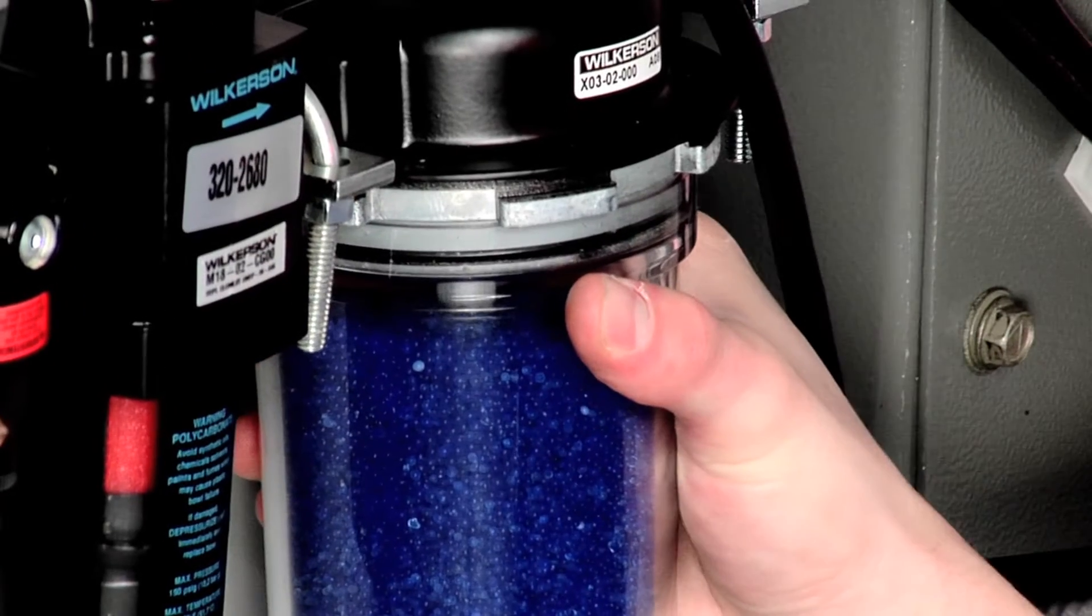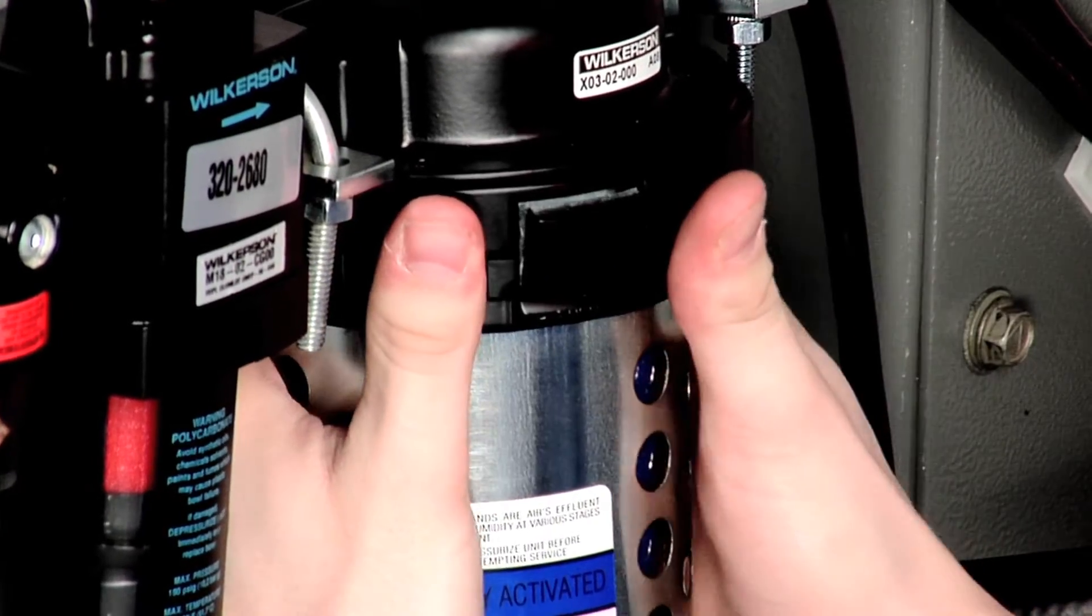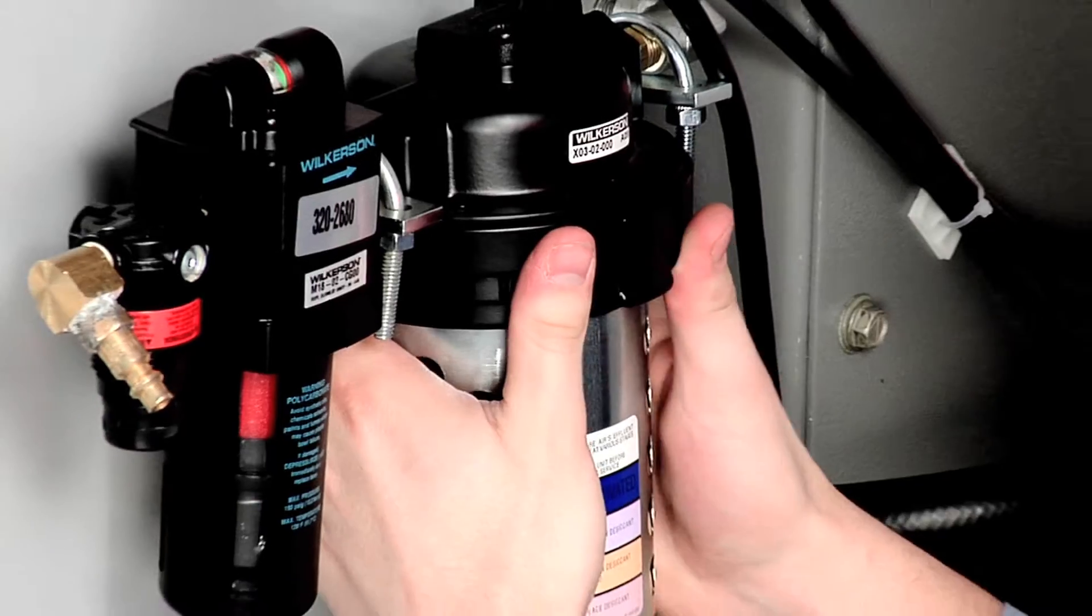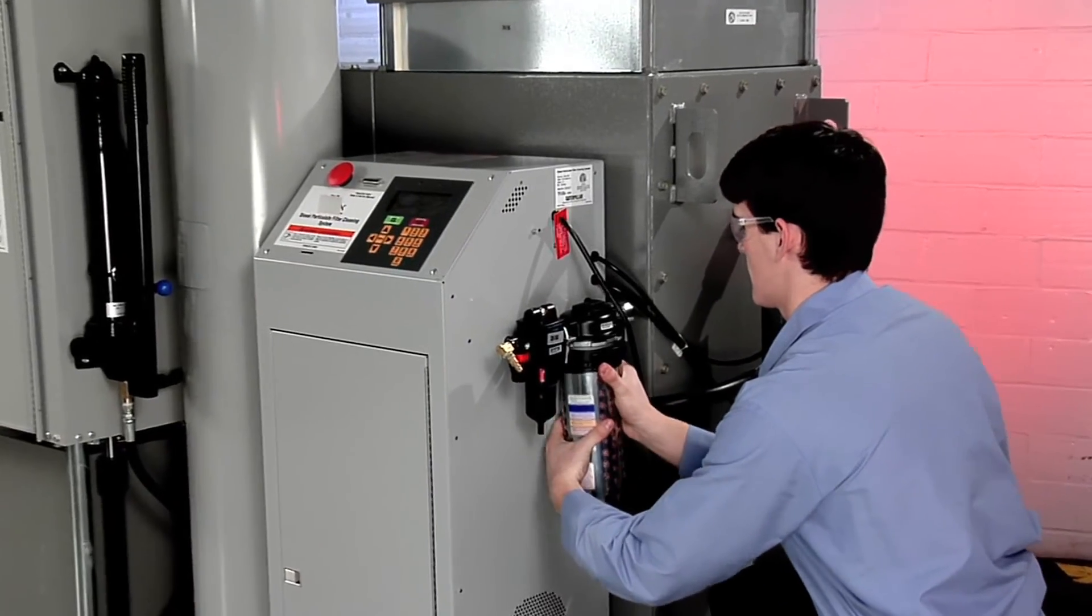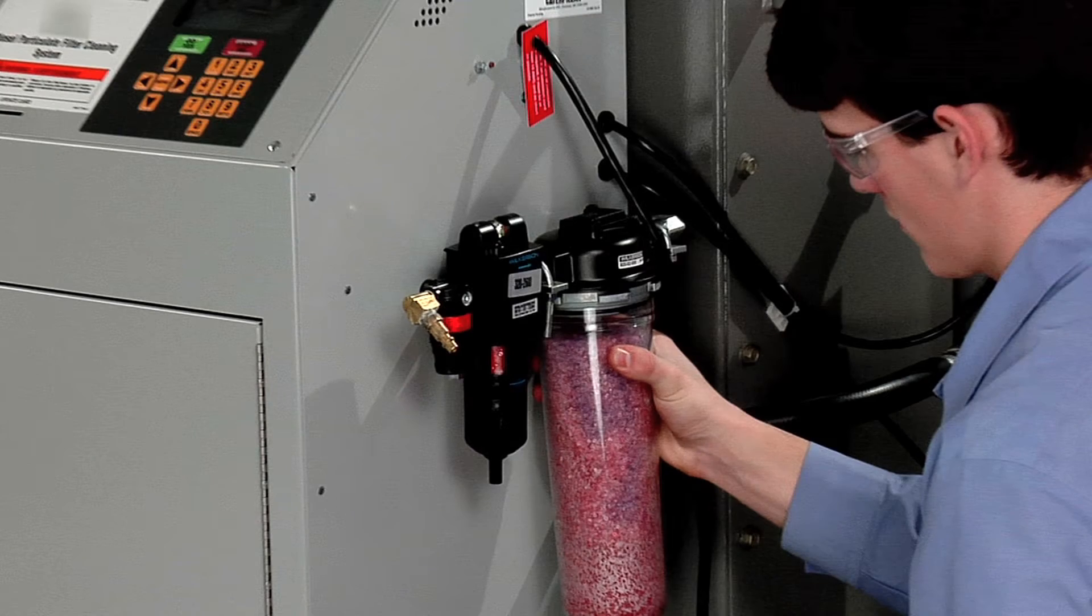The desiccant is visible through the clear desiccant filter bowl. It contains color indicator beads that change from blue when dry, to pink when wet. Pink indicates the desiccant must be regenerated or replaced.